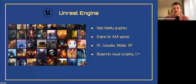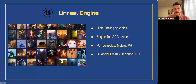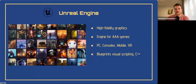Next is Unreal Engine — another powerful engine known for its high-fidelity graphics, used in many AAA games such as Fortnite and Star Wars titles. Unreal uses a visual scripting system called Blueprints and also supports C++ for complex tasks. If you dream of working on the next Spider-Man, Star Wars, or Witcher, learn C++ and Unreal Engine 5.